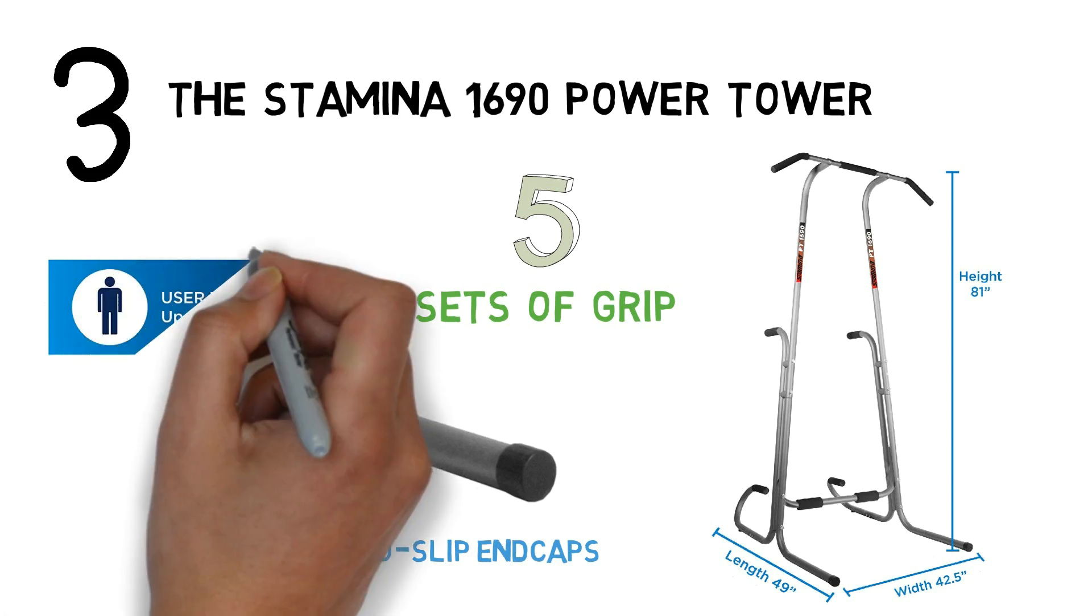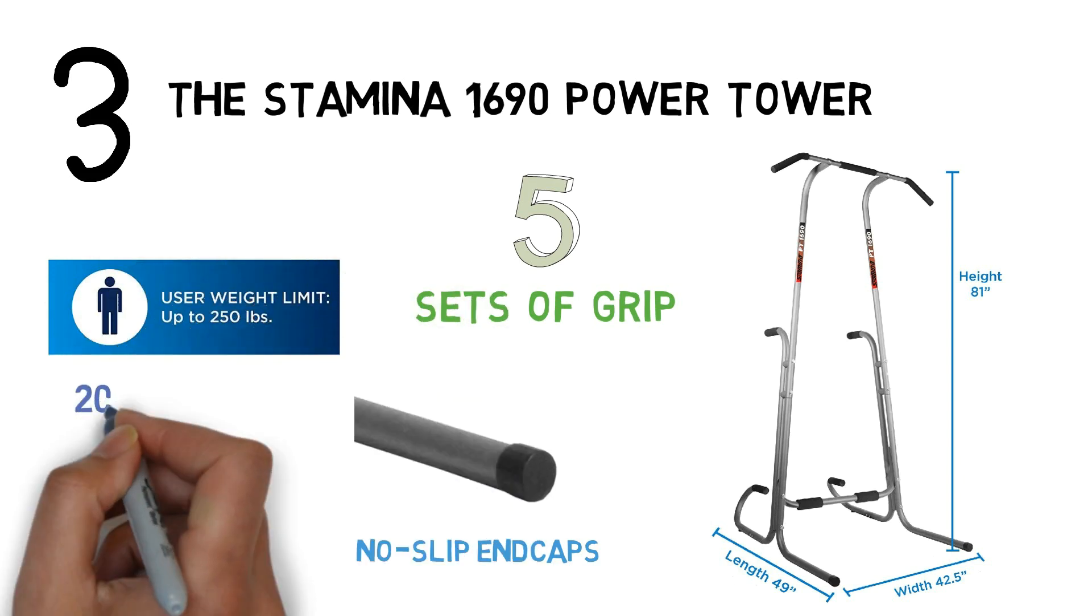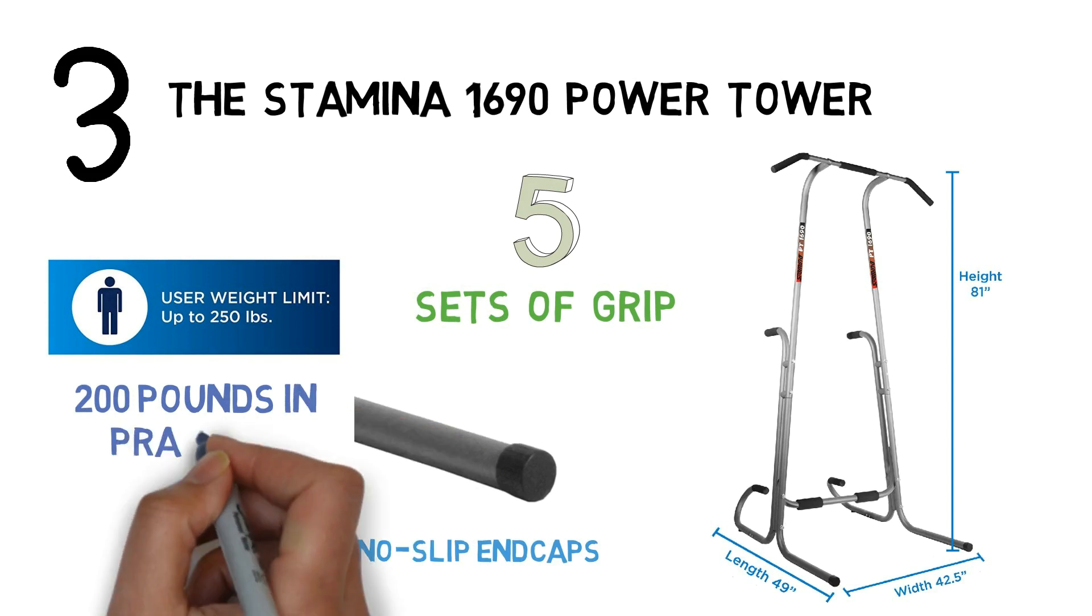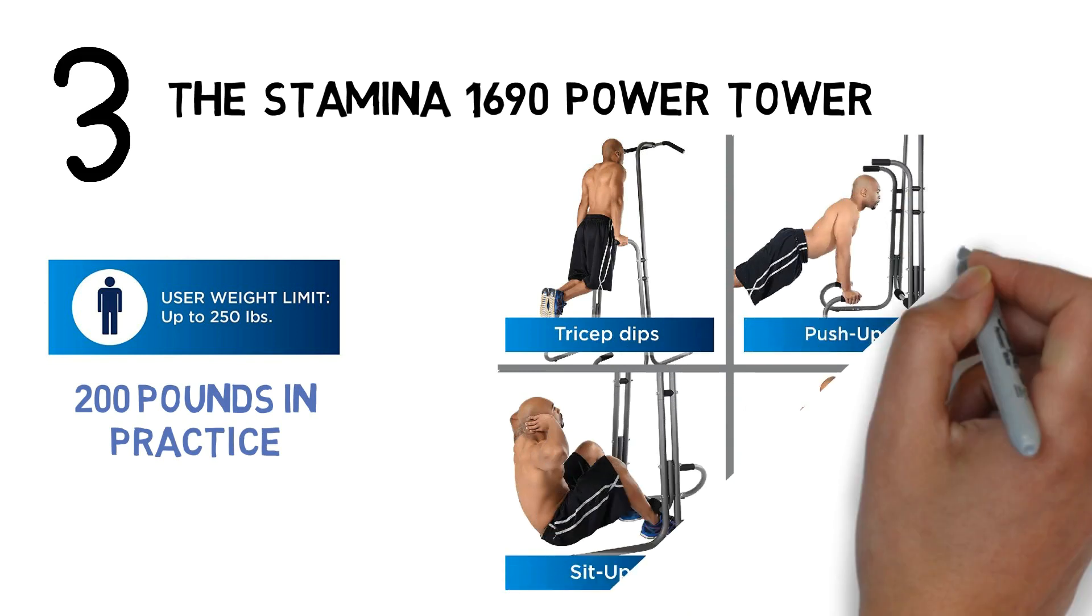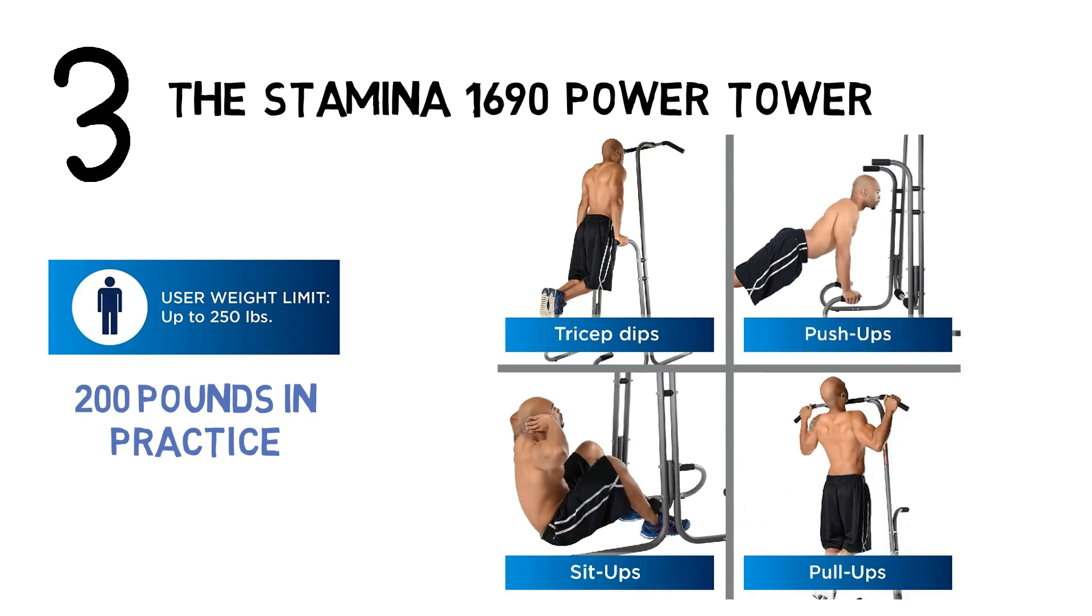Stamina states that the capacity is 250 pounds, but as noted below, it's closer to 200 pounds in practice. In addition to pull-ups and chin-ups, this model is designed for tricep dips, sit-ups, push-ups, and leg raises, though there is no backrest to assist with the leg raises.